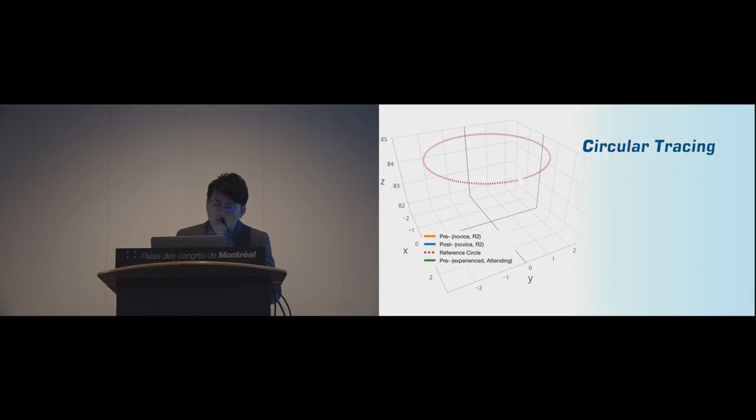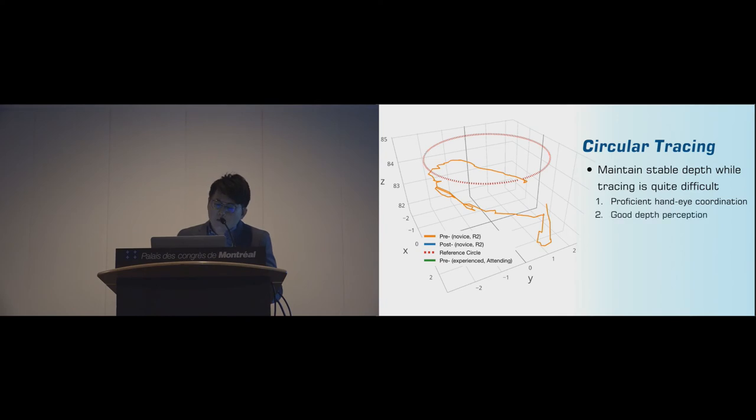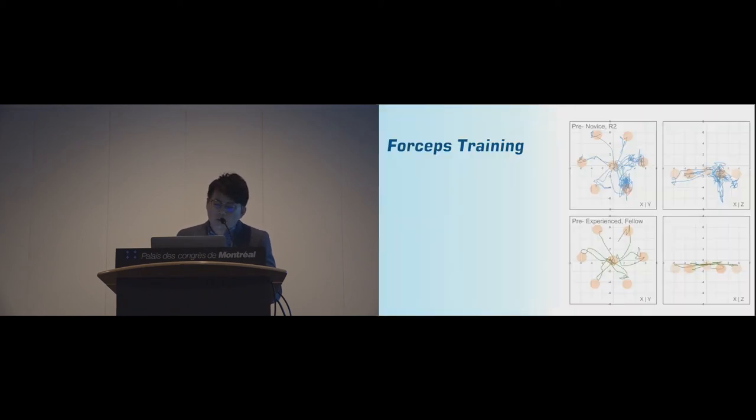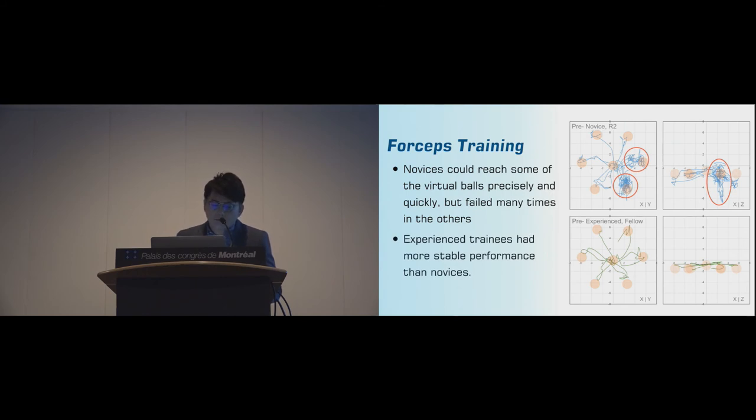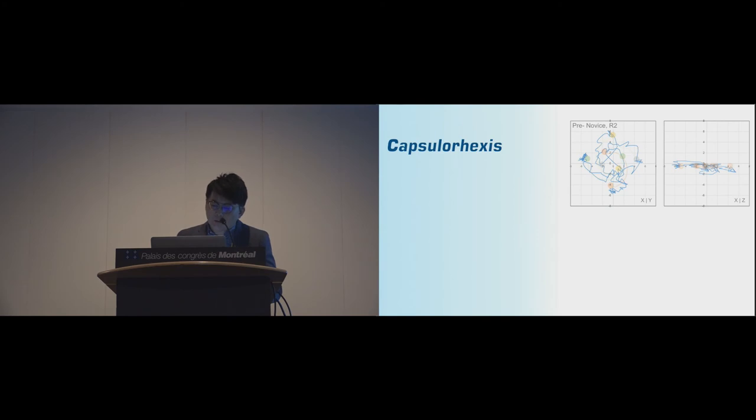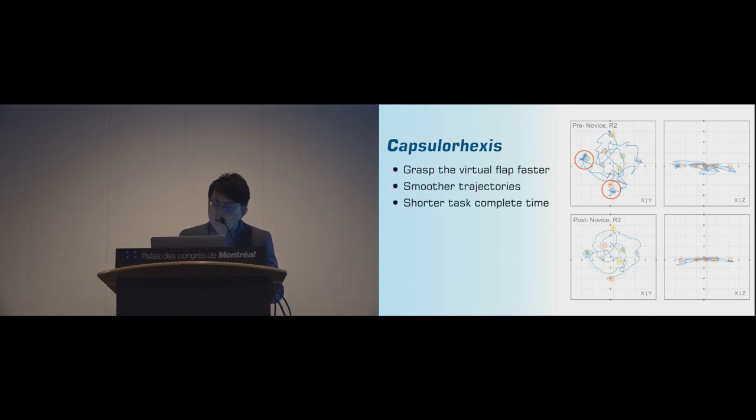In circular tracing module, maintaining stable depth while tracing is quite difficult which needs a proficient hand-eye coordination and depth perception. Novices can achieve a better circle after practice but still worse than the baseline of the experienced surgeon. In forceps training module, novices can reach some of the virtual balls precisely and quickly but fail many times in the others. Experienced trainee has more stable performance than novice. Capsulorhexis is very difficult in real surgery. Surgeons usually need more than one year to learn this skill by traditional training methods. With CATAR system, it only takes one hour for this second-year resident to grasp the virtual flap faster, to draw a smoother trajectory, and to complete this task in a shorter time.